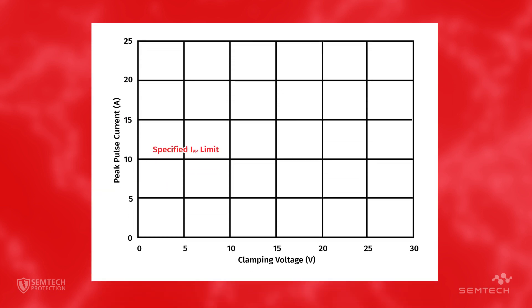Looking at a practical example, consider the peak pulse current versus clamping voltage IV characteristic. This example shows three options for selecting a TVS diode: TVS1, TVS2, and TVS3.